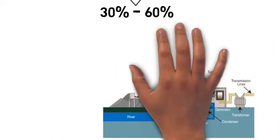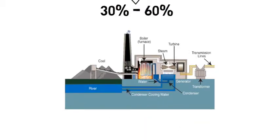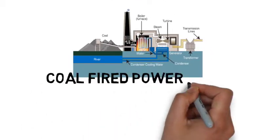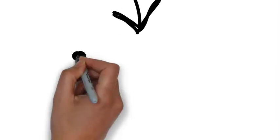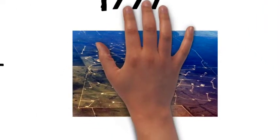And electricity generated from it produces 30 to 50% less carbon emissions than brown and black coal. So in 1997, Australia included coal seam gas as part of their energy mix.